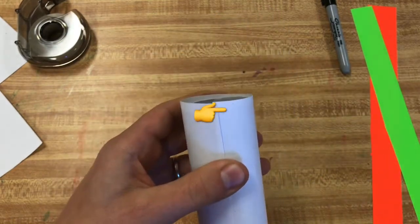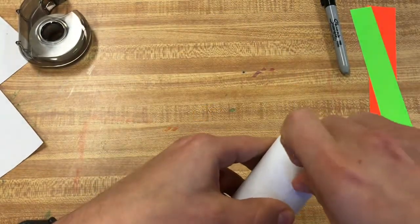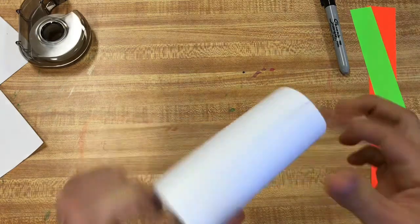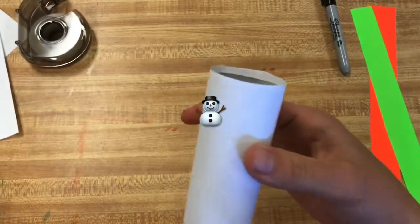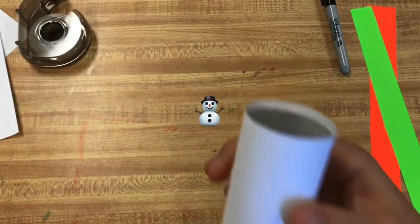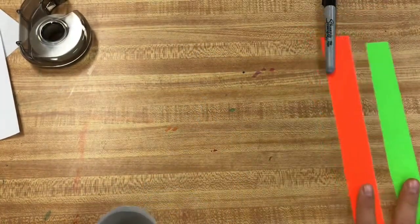And same thing on this side, up and down. And there is your perfectly white snowman! He looks like he needs a couple little features. That's why I have my colored paper.